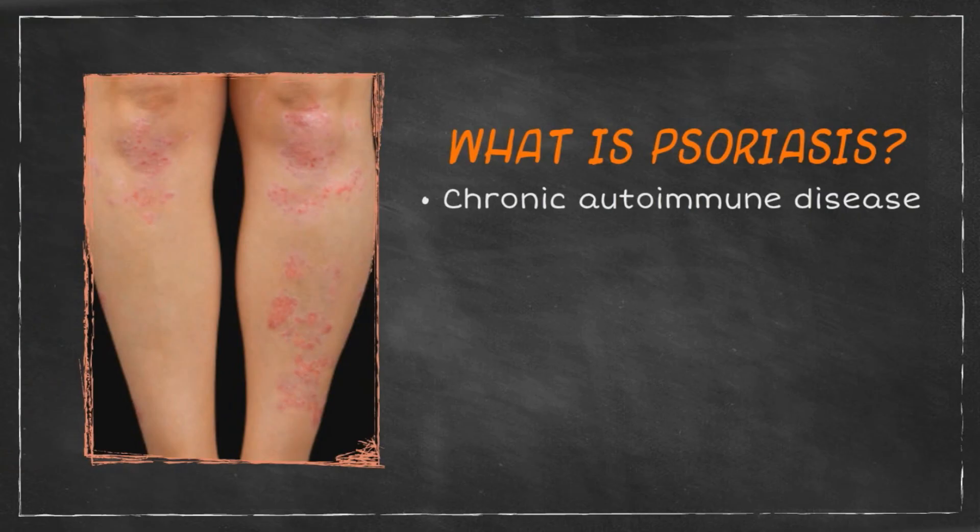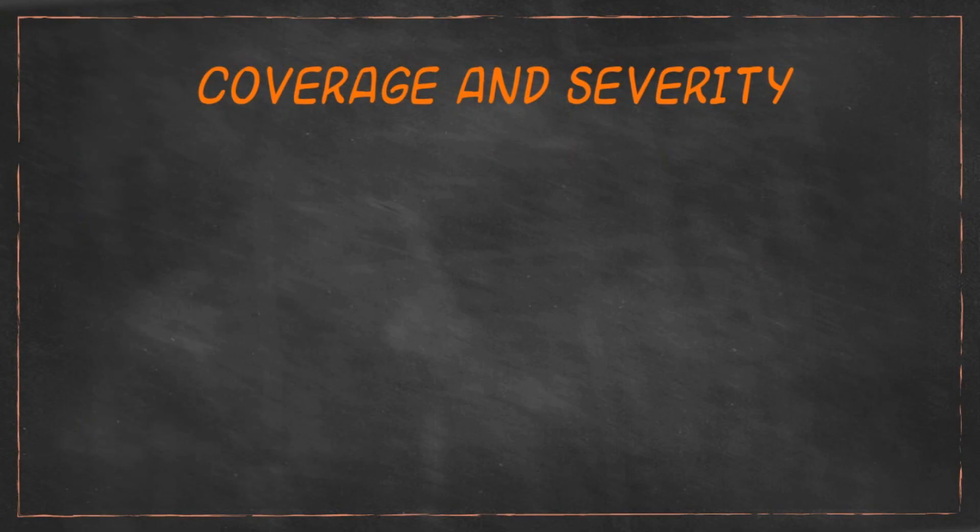Psoriasis is a chronic autoimmune disease characterized by patches of red, scaly, and itchy skin. The extent of coverage and severity ranges greatly between individuals with psoriasis, but they can be divided into three general categories.